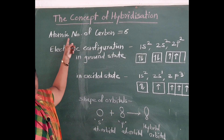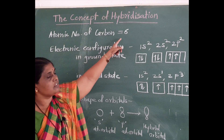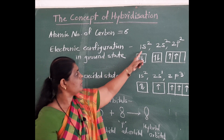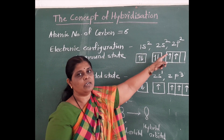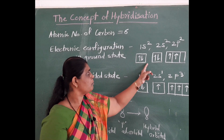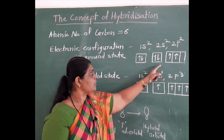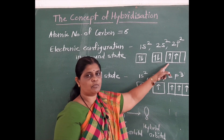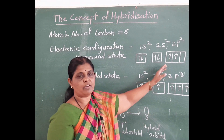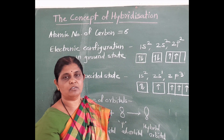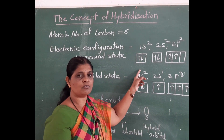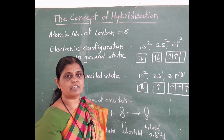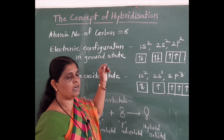The atomic number of carbon is 6. Its electronic configuration is 1s2, 2s2 and 2p2. After filling the electrons, it is observed that there are two unpaired electrons in the outermost orbit. Therefore, the valency of carbon should be 2. But organic compounds show that the valency of carbon is 4, and that is explained with the help of the concept of hybridization.